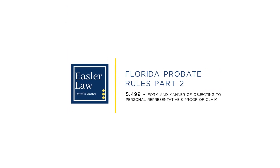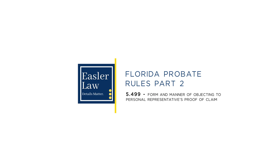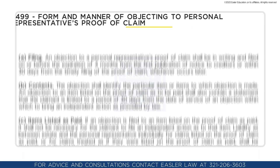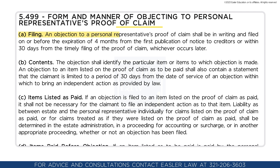Rule 5.499. Form and manner of objecting to a personal representative's proof of claim. Filing: An objection to a personal representative's proof of claim shall be in writing and filed on or before the expiration of four months from the first publication of notice to creditors, or within 30 days from the timely filing of the proof of claim, whichever occurs later.